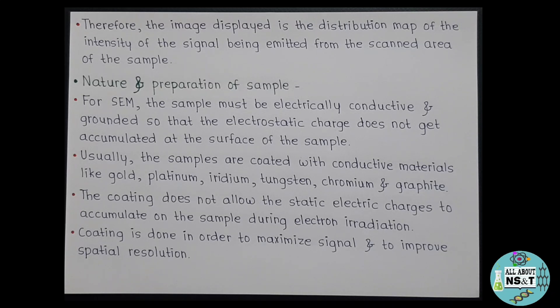For SEM, the sample must be electrically conductive and grounded so that the electrostatic charge does not get accumulated at the surface of the sample. Usually the samples are coated with conductive materials like gold, platinum, iridium, tungsten, chromium, and graphite. The coating does not allow the static electric charges to accumulate on the sample during electron irradiation. Coating is done in order to maximize signal and to improve spatial resolution.